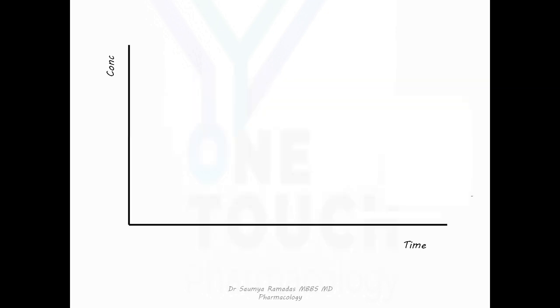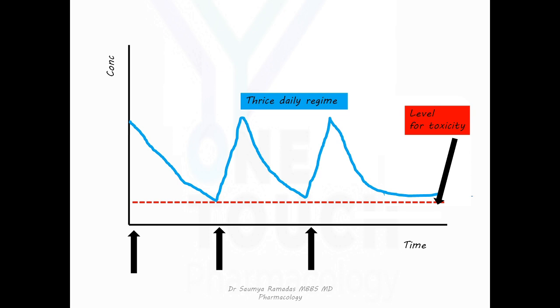This is the plasma concentration time graph for aminoglycosides. This red line represents the level for toxicity. That means if the drug concentration is above this level, there is always a risk for toxicity. Imagine if the drug is given as a thrice daily regimen. You can note that the drug level remains above the toxicity level for most of the time. But if the drug is given as a single or once daily regimen, you can note that for most of the time, the drug level remains below the toxicity level. That's the importance of giving aminoglycosides as a single large morning dose, so that the toxicity due to this drug can be avoided.